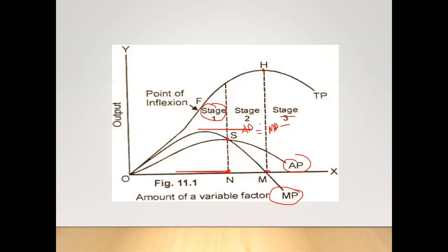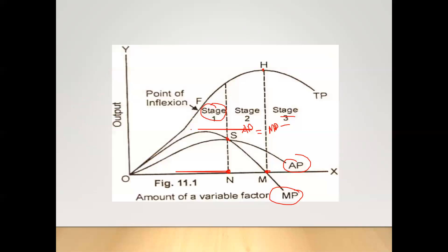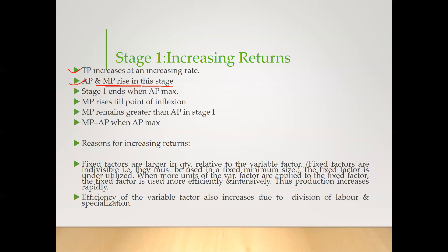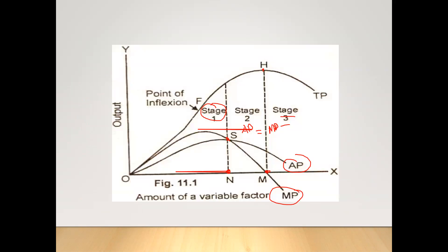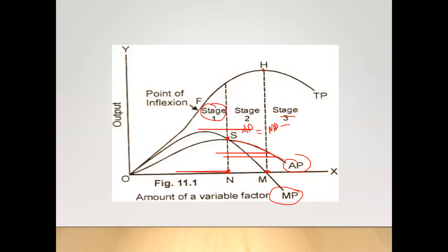Correlating the table and the curve: in stage 2, where stage 2 is finishing, MP becomes negative — that is stage 3, which starts at the zero point. Moving to stage 1, which we call increasing returns: TP increases at an increasing rate, and AP and MP both rise in this stage. Stage 1 ends when AP reaches its maximum. You can see AP is continuously declining after that point. MP rises till the point of inflection.